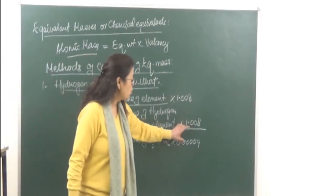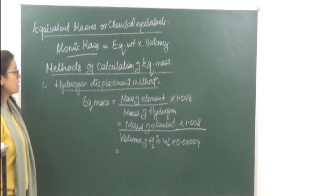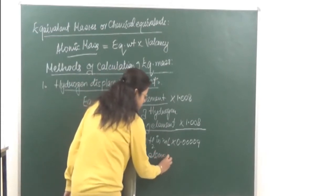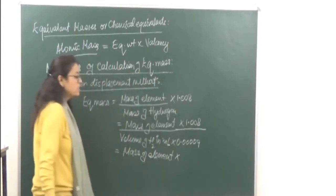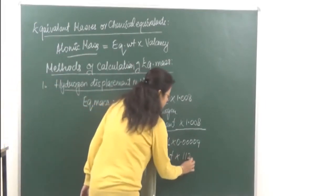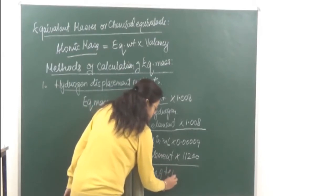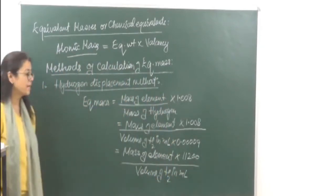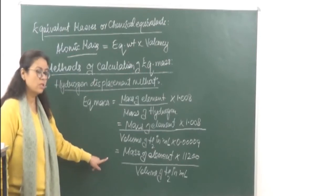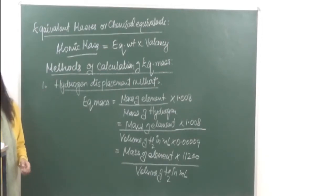When we divide these two formulas, the equivalent mass by hydrogen displacement becomes: mass of element divided by volume in mL into (1.008 / 9×10⁻⁵). So if mass of hydrogen is given, use the first formula; if volume of hydrogen is given, use the second formula. This is the first method to calculate equivalent mass. Let's go on to the second method.